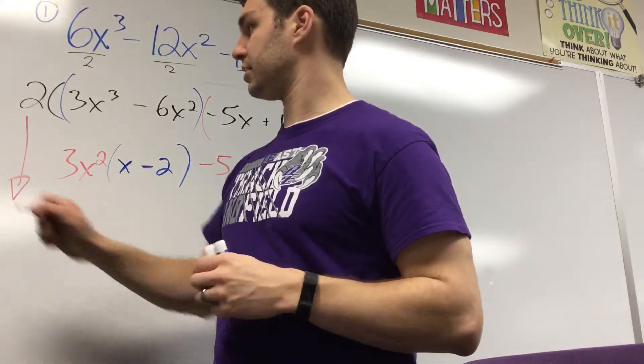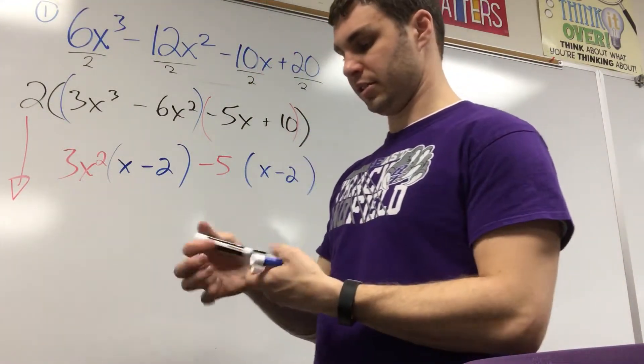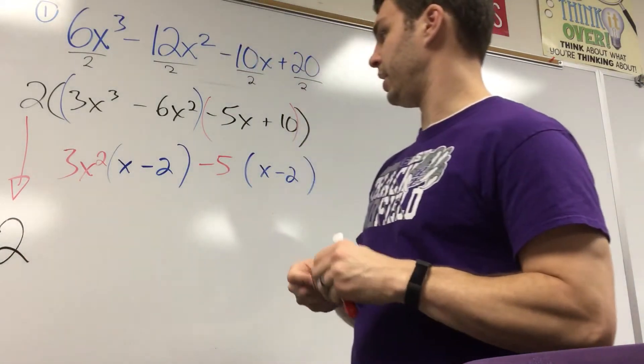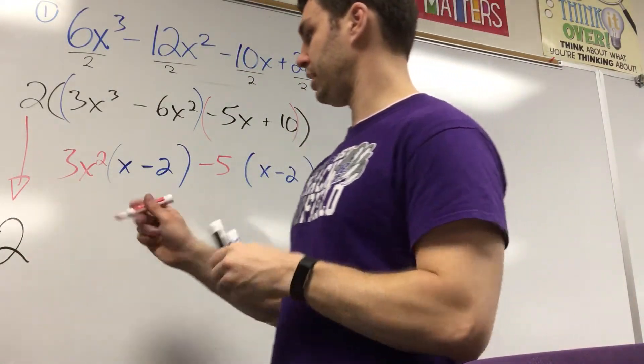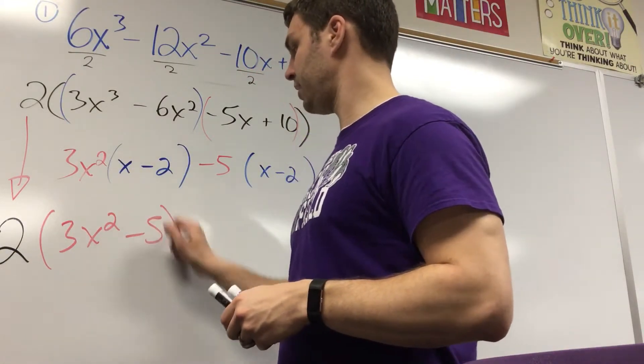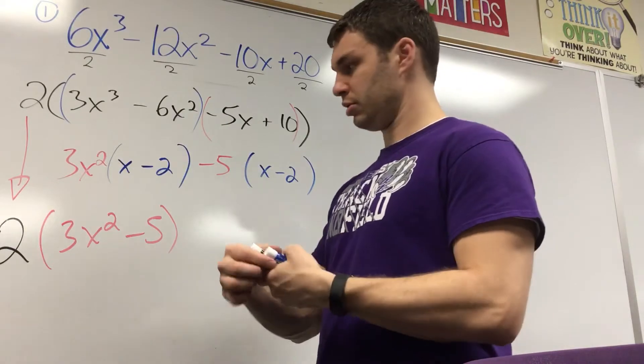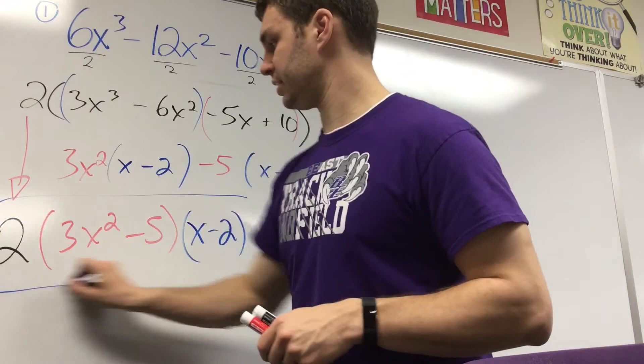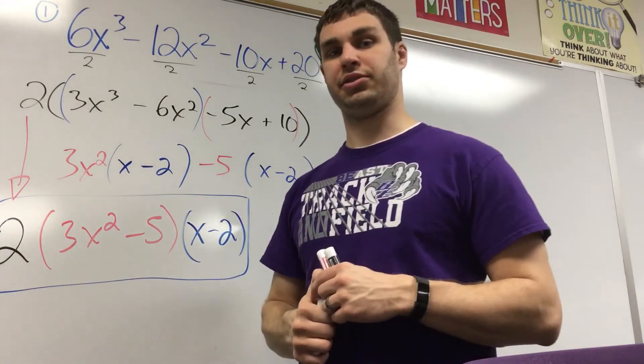Now, your answer is going to take this 2 from the front. It's going to put it in front of yours. And then I'm going to write my red, 3x squared minus 5, and then my blue, x minus 2. And all of that together is your answer.